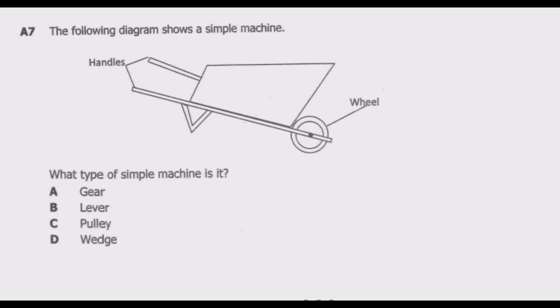Let us look at question A7. The following diagram shows a simple machine. What type of machine is it? So if you look at this one, this is basically a wheelbarrow. It has a pivot here, then this is where the load is, then this is where effort is applied. You understand there are about 6 types of machines when you're dealing with moments.